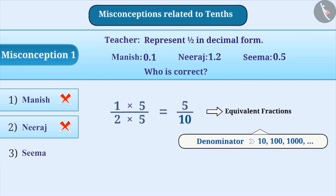This is represented in decimal form as 0.5. Therefore, 1 by 2 is equal to 0.5. So, option 3 is the correct answer.